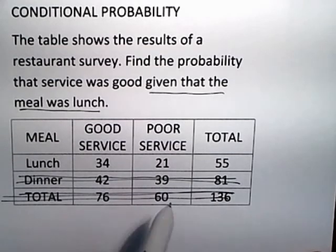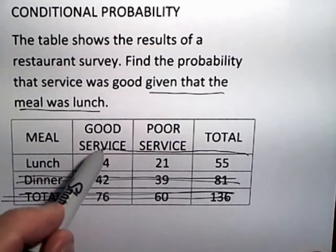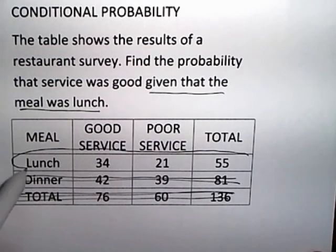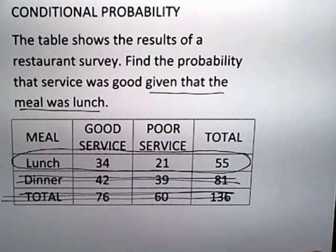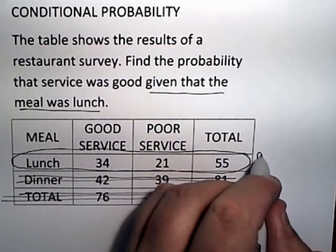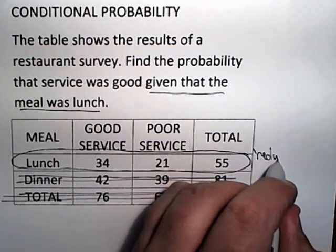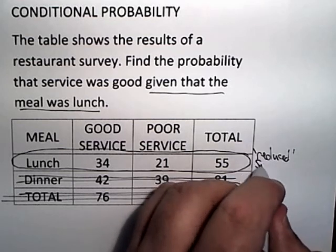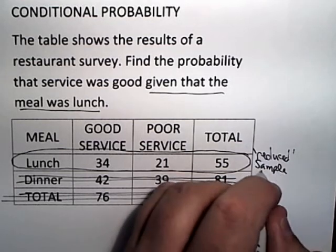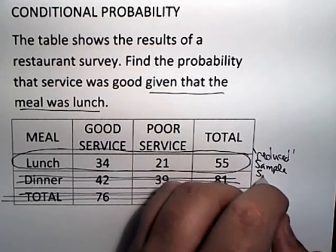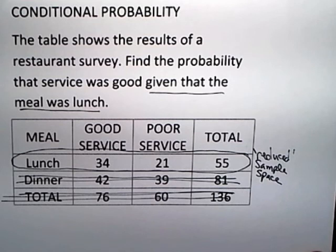The reduced sample space simply consists of the first row of the table. This is what I call the reduced sample space for the conditional probability problem.